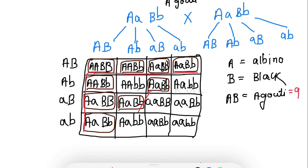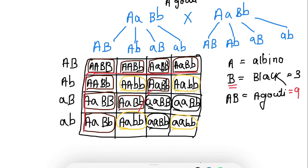Next, black color means only capital B is present and A is in small form. Looking at the Punnett square, there are 3 black color combinations. Then albino means only capital A is present and B is in small form — those are albino. And where all genes are in small form, there is also no expression, resulting in albino. So albino accounts for 3 + 1 = 4 combinations.